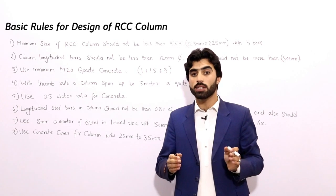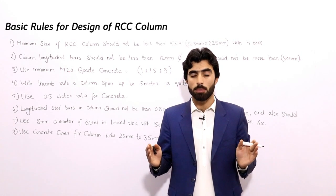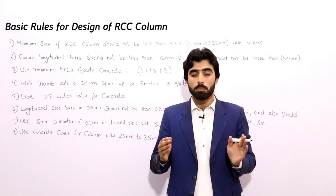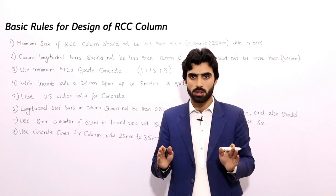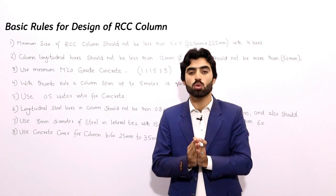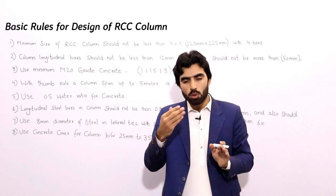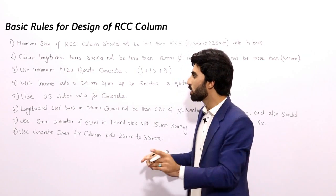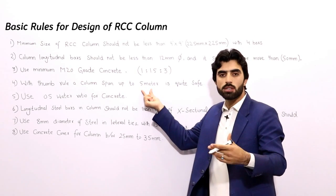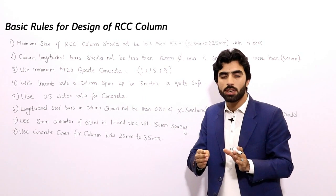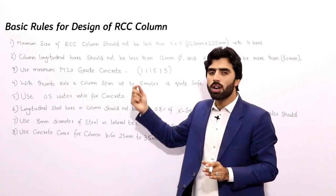The fourth rule concerns the spacing between RCC columns. As a thumb rule, a span of up to 5 meters between RCC columns is quite safe. If you want to increase the span beyond 5 meters — to 6, 7, or 8 meters — it depends on the structural design and the cross-sectional area of the RCC column. For a 9 by 9 inch column, 5 meters is quite safe.